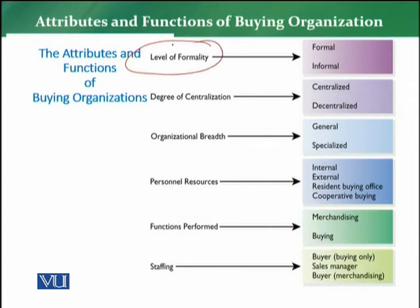Level of formality کی بات کریں تو ایک retail organization کے اندر جو سب سے پہلی بات observe کی جاتی ہے وہ یہ کہ define کی جاتی ہے with respect to its functions — either it is a formal organization or it is an informal organization۔ اگر وہ properly defined کی گئی ہو، proper structure defined کیا گیا ہو starting from the top goes till the bottom تو then it is a formal organization، اور اگر generally tasks assigned کیے گئے ہوں تو then it is a kind of informal buying organization۔